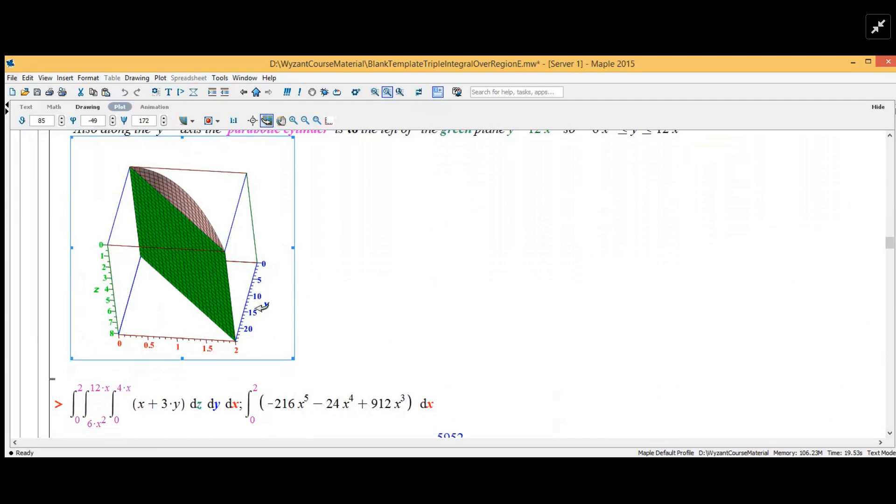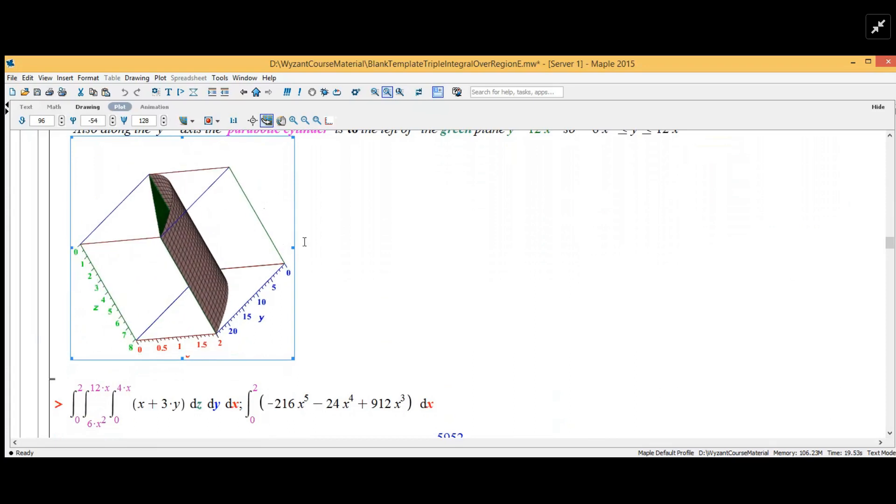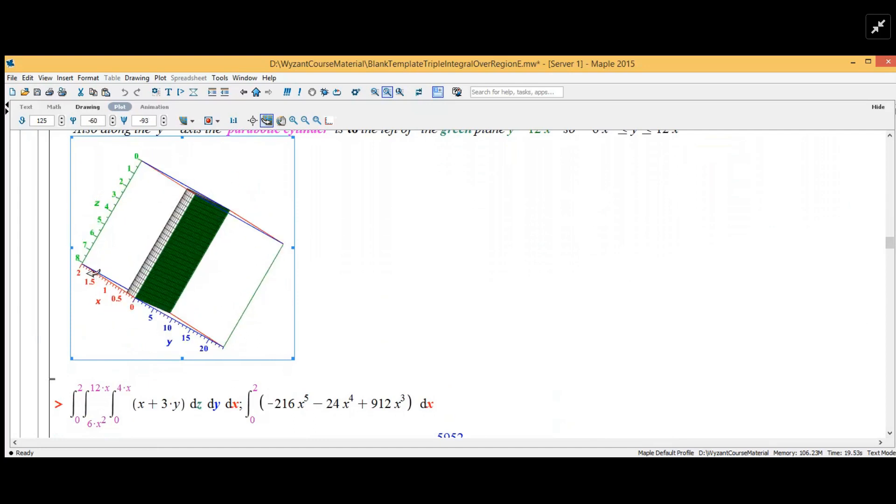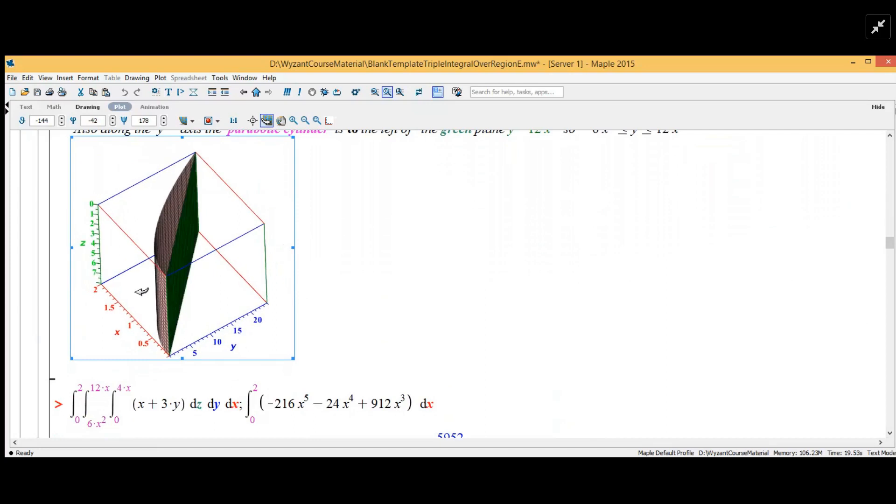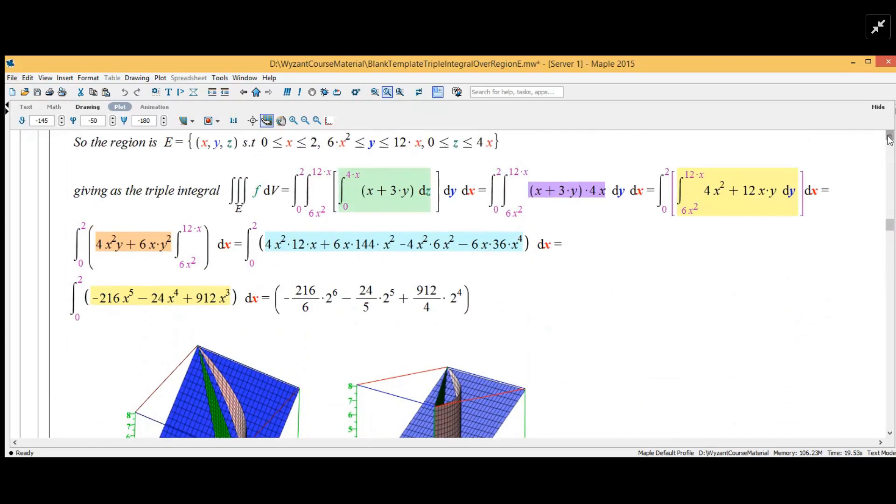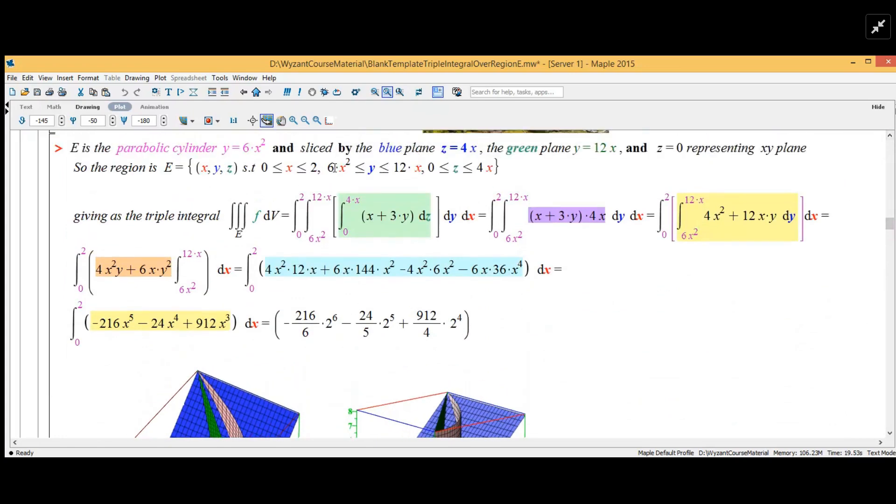You can see that the parabolic cylinder is actually closer to the origin than the green plane. Therefore the y values, the lower limit for y is the parabolic cylinder. Y is greater than or equal to 6x squared and less than or equal to 12x, which is the green plane. So the y values range from lower limit 6x squared to 12x, and the z goes from zero to 4x.